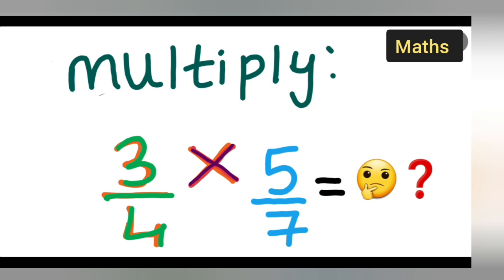I have to multiply these two fractions. Let's see how to multiply 3/4 by 5/7.